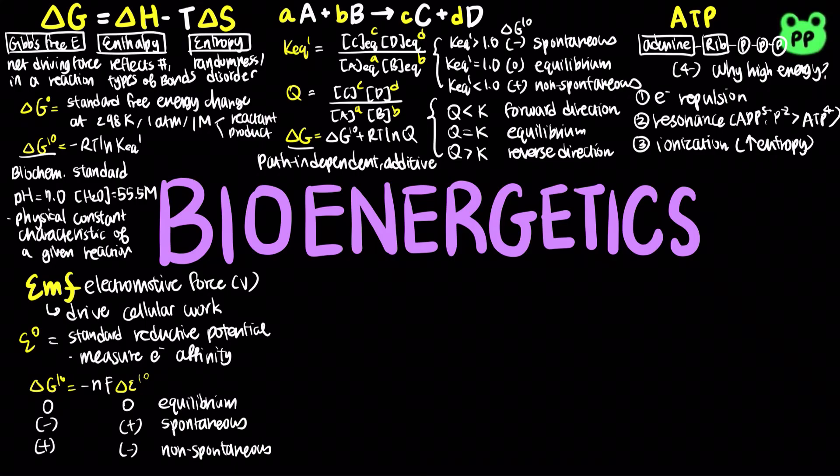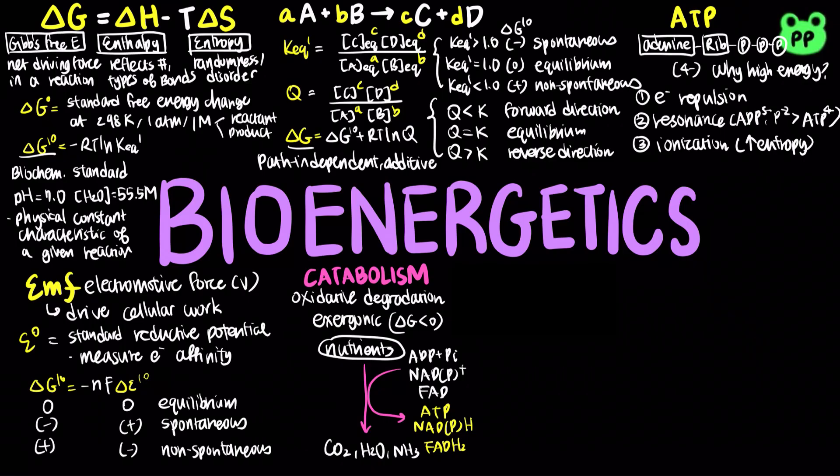Metabolism is the totality of an organism's chemical reactions. Catabolism releases energy by breaking down complex molecules, such as the nutrients we ingest, into simpler compounds such as carbon dioxide, water, and ammonia.